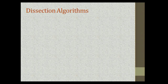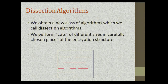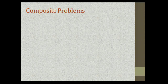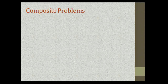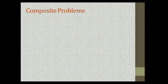We obtained a new class of algorithms which we call dissection algorithms. We have a visual picture where we perform cuts of different sizes in different places in the encryption structure — this looks like dissection. Our dissection algorithms are applicable to R-fold encryption, but they are in fact applicable to a more general set of problems, which we call composite problems.